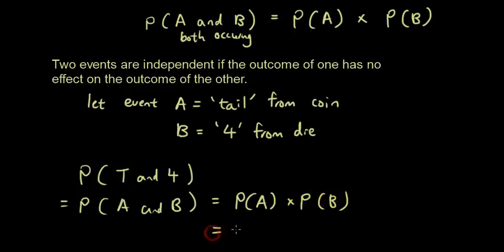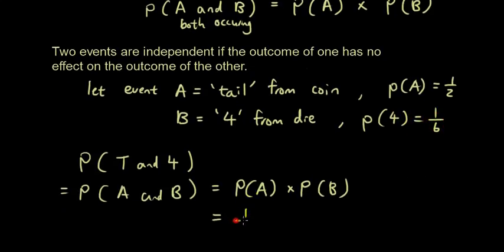So what is the probability of A? The probability of A is a half, right? Because there are two sides on a coin, to get a tail, that's one out of two sides. And since there are six sides on the die, then the probability of getting a 4 is one out of six. So the probability of A times the probability of B, and the answer is 1 over 12.